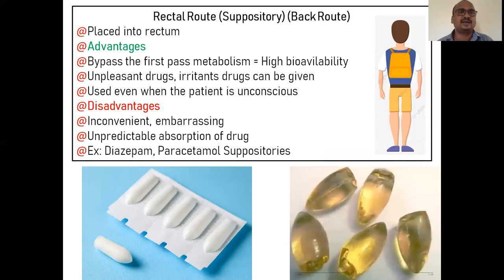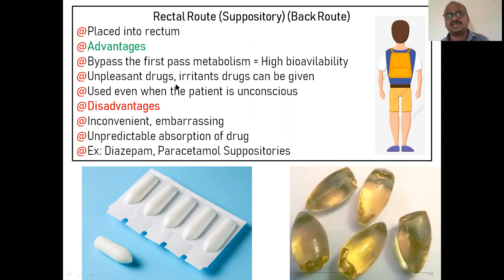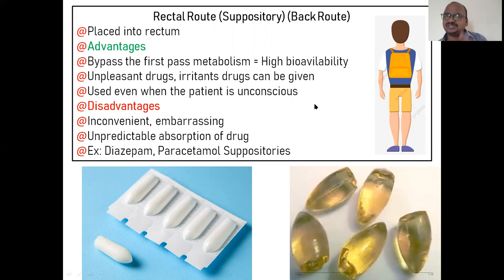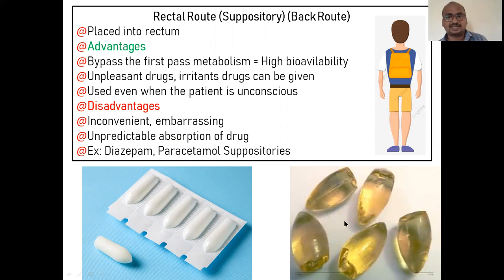Rectal route is a very good and excellent route. It bypasses first-pass metabolism so high bioavailability is achieved. Unpalatable or tasteless drugs can also be prepared in suppository form — for example, chloroquine. It can be used even when the patient is unconscious or in a coma by inserting the suppository into the rectum. Paracetamol suppositories are available in this form.